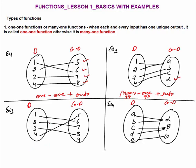Example 3: 1 is connected with 6, 2 is connected with 7, 3 is connected with 8, 4 is connected with 5, and 9 is empty. This is a one-one function because each and every input has its own unique output, but it is a one-one plus into function because 9 is not connected with any element of the domain. Example 4 is a many-one function because many inputs are connected with one output — A and B have one output alpha, C and D have one output beta. They don't have unique outputs. So this is a many-one plus onto function, because each and every element of the co-domain is connected with some element of the domain.